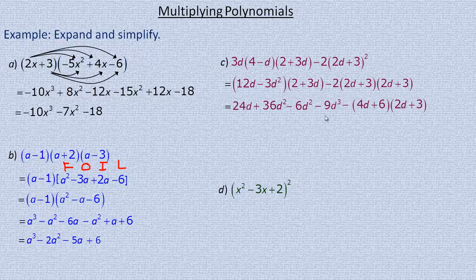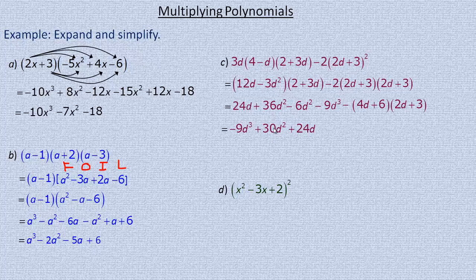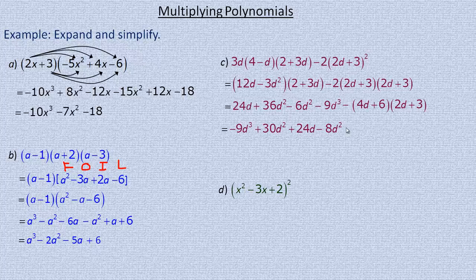Now I'll expand and simplify. I have a negative 9d cubed, and 36d squared minus 6d squared is 30d squared, plus 24d. There's a subtraction sign before the second product, so it changes every sign: 4d times 2d is 8d squared, becomes minus 8d squared; 4d times 3 is 12d, becomes minus 12d; 6 times 2d is 12d, becomes minus 12d; and 6 times 3 is 18, becomes minus 18.